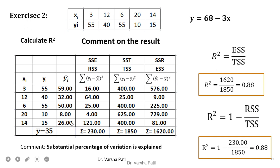The value 0.88 is very close to 1. This indicates that most of the points are close to the regression line. Therefore, a substantial percentage of variation is explained for the dependent variable by the independent variable.